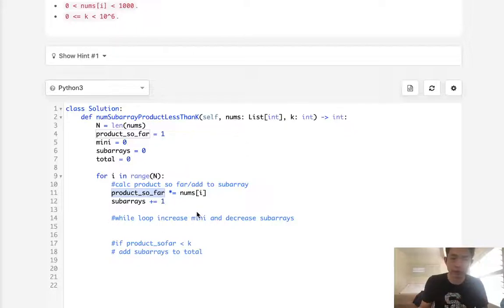We want to see if our product so far is, if we need to increase our index pointer for the minimum i, because our product so far is greater than k. So we'll say while product so far is greater or equal to k, because if it's equal to, that doesn't count either. And our mini i is less than or equal to i, because that's going to be the index point.